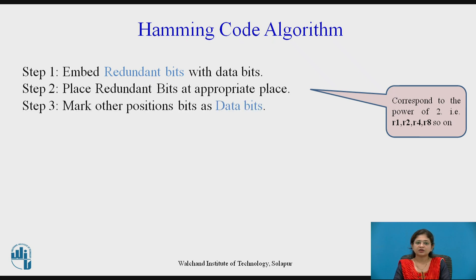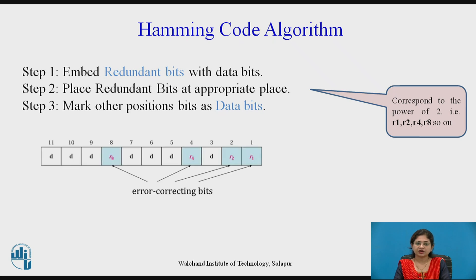Mark the other positions as data bits. This diagram shows the redundant bits — r1, r2, r4, and r8 — as error-correcting bits, whereas the remaining positions labeled d are data bits.